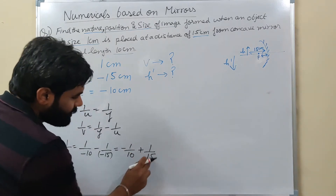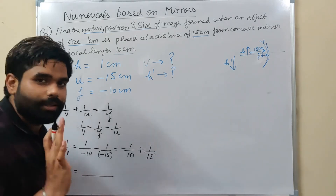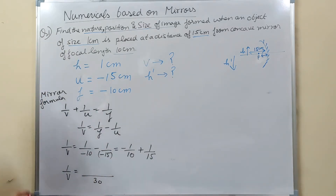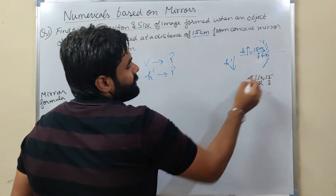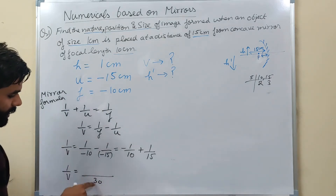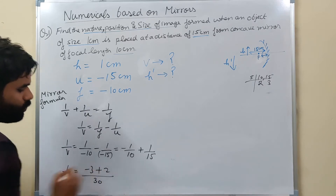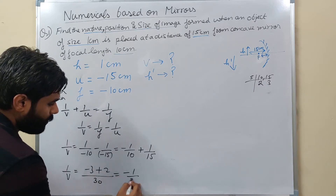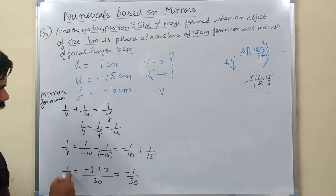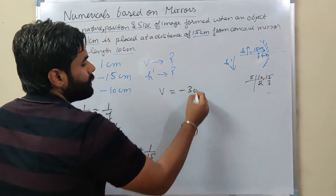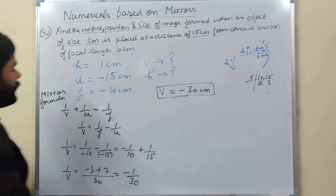Solving this using LCM: LCM of 10 and 15 is 30. So 1/V = (-3 + 2)/30 = -1/30. Taking reciprocal, V = -30 cm. Write the unit - it's a rule. V = -30 cm. I applied mirror formula, knew U and F, and found V.